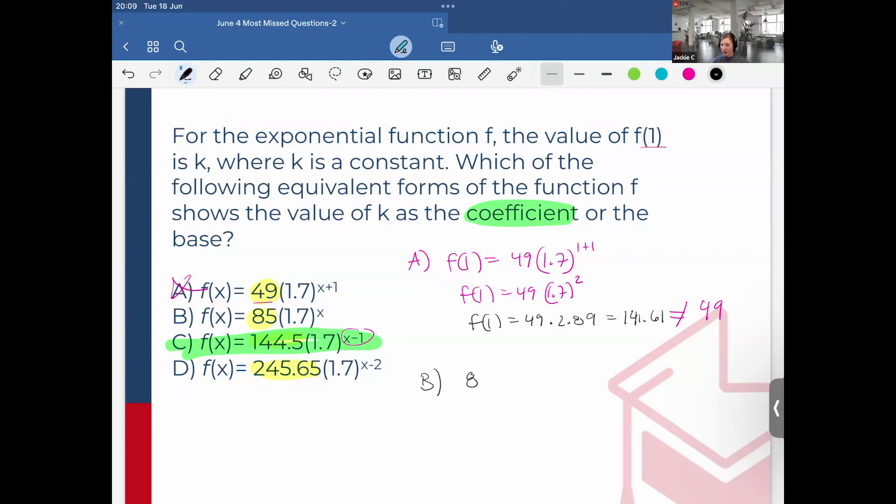Continuing, B, same thing. So f(1). So f(1) is equal to 85 times 1.7 to the 1. So basically 85 times 1.7, that's equal to 144.5, and that is not equal to 85. So remember, 85 is our coefficient. So also eliminate.